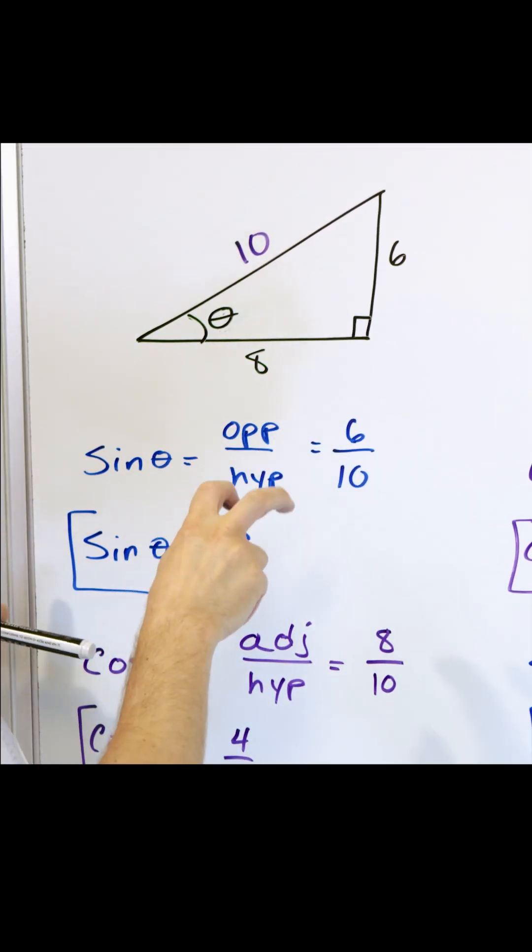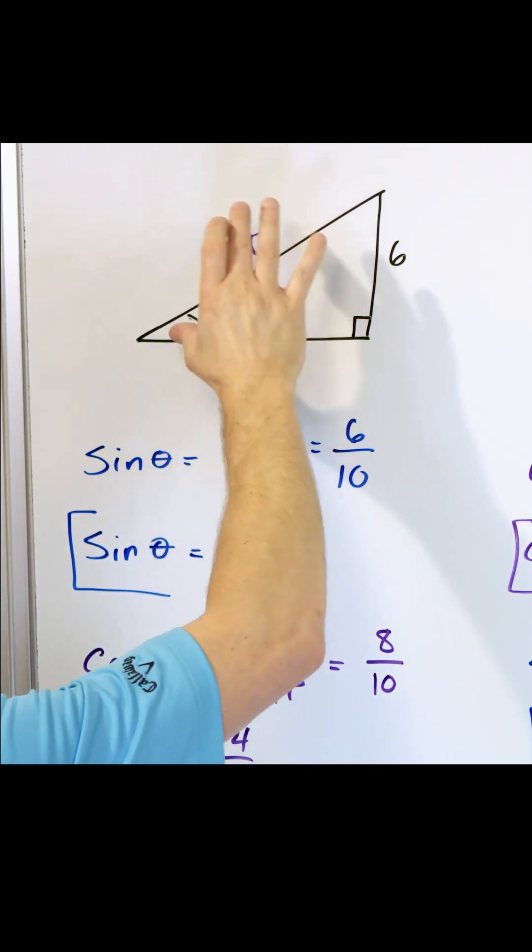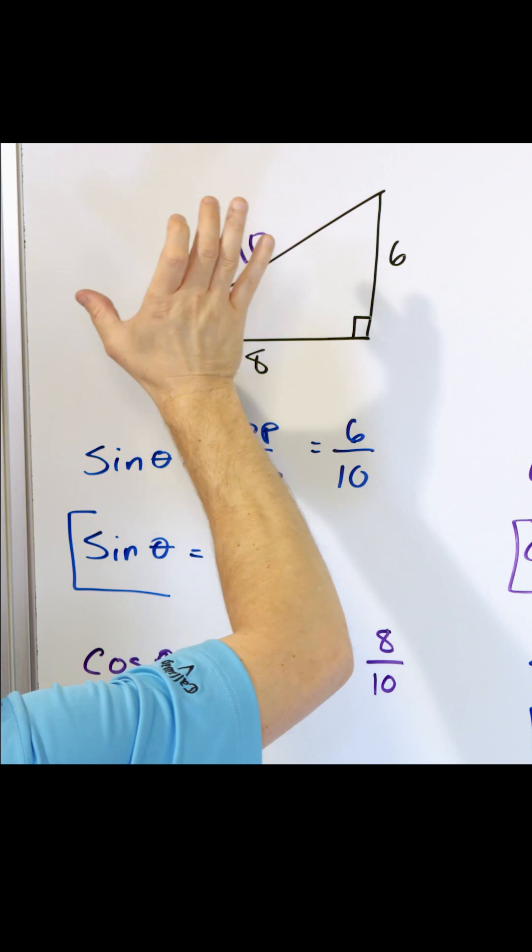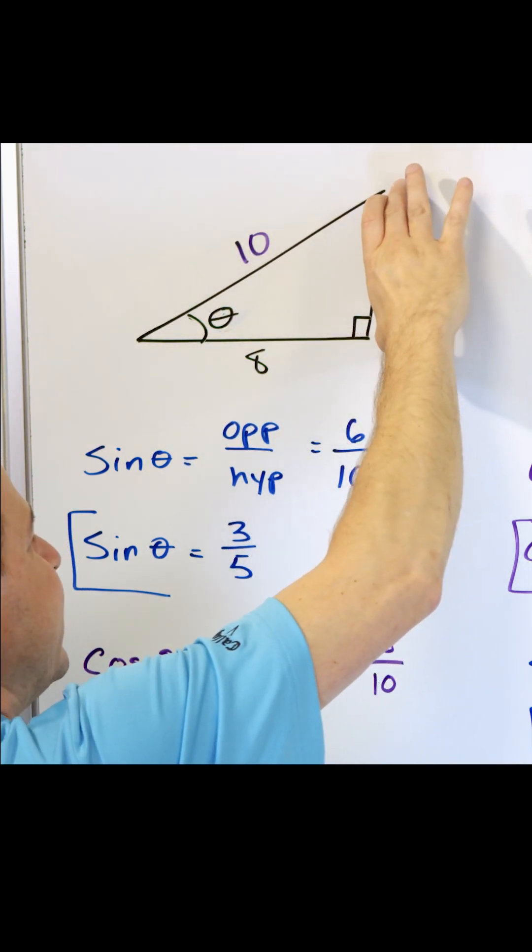The sine function is the chopping function in the y direction. It takes the hypotenuse that you have and it chops it down, I don't have 10 anymore, it should give me six in this direction.